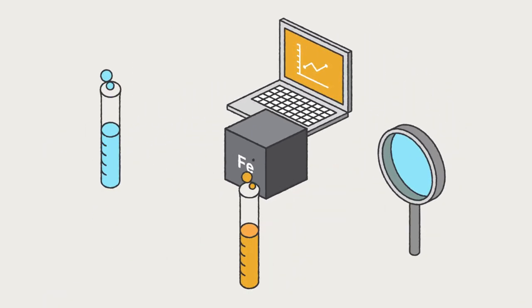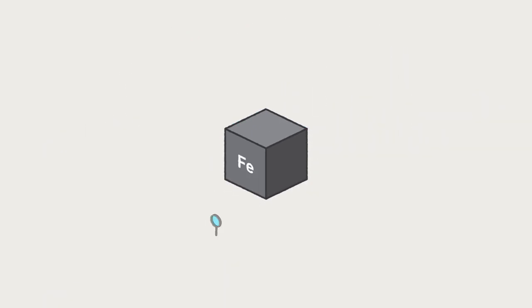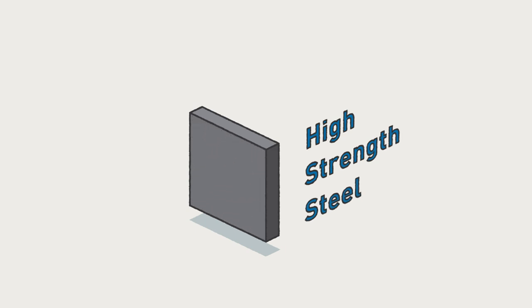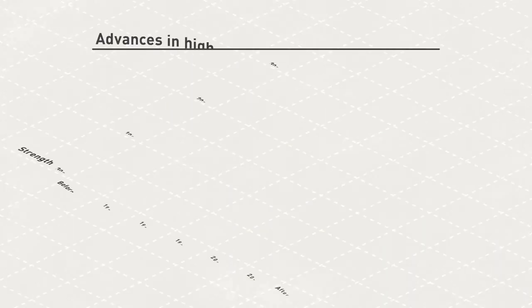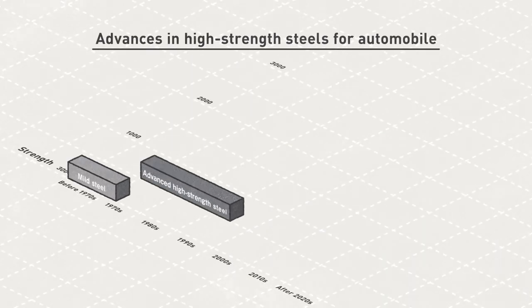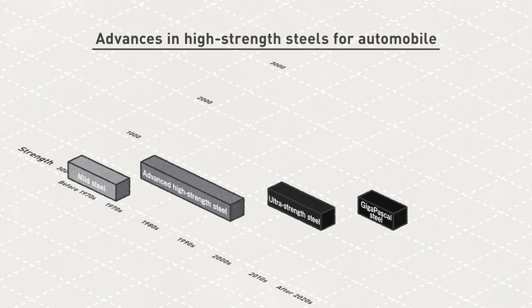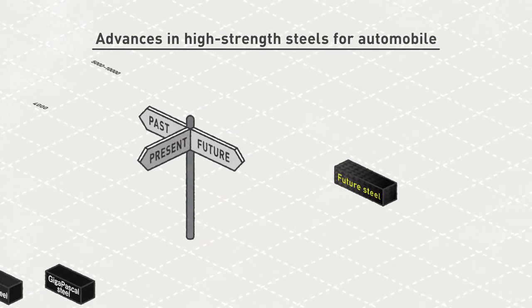New steel products are developed one after another. High strength steel is stronger and lighter than conventional steel, and the use of such steel to make cars is increasing year by year. If we can make ideal steel in the future, such steel may be 10 times stronger than today's steel, and may weigh only 10% of what it weighs today.